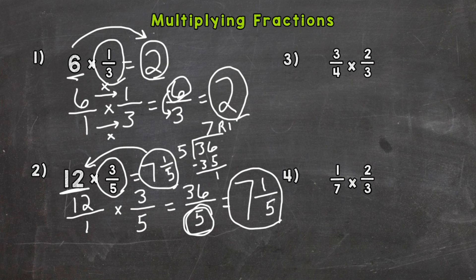So number three, we have three-fourths times two-thirds. All right, straight across, three times two is six, and four times three is twelve. So our answer is six-twelfths. Now that fraction can be simplified. It's a proper fraction, but we have a greatest common factor between the six and the twelve that we can break down or simplify this fraction into its lowest terms.